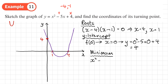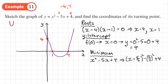Starting with x² - 5x + 4, completing the square gives (x - 5/2)². Expanding that bracket produces a term of (5/2)² which we don't want, so we subtract it and add back the +4. This gives (x - 5/2)² - 25/4 + 4, which simplifies to (x - 5/2)² - 9/4.